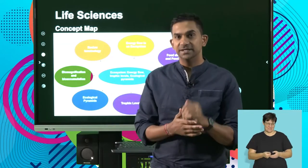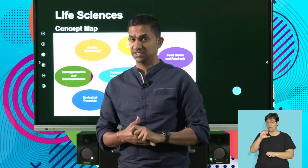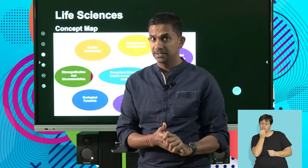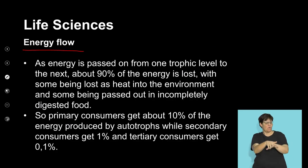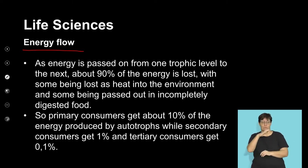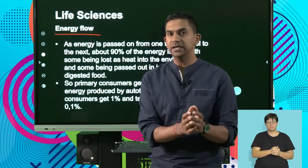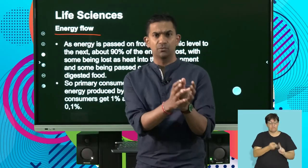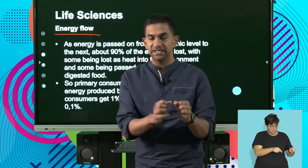Welcome back, Life Science Learners. We've been focusing on energy flow — let's spend some time looking at how energy flows in an ecosystem using food chains and food webs. It's important to recognize that not all the energy consumed by one trophic level is available to the next organism. When an organism consumes its food, most of that energy is used to grow, reproduce, or repair.